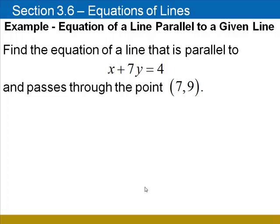Here's the first example. Find the equation of a line that is parallel to x plus 7y equals 4 and passes through the point (7, 9). The first thing we need to do is find the slope of the line that we were given. Since it's not in y equals mx plus b form, we're going to go ahead and solve that equation for y.